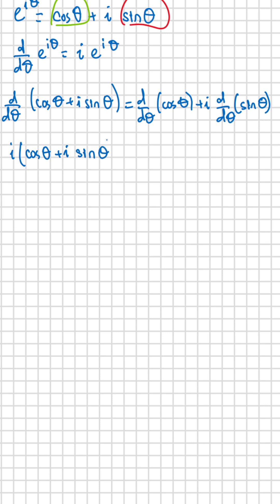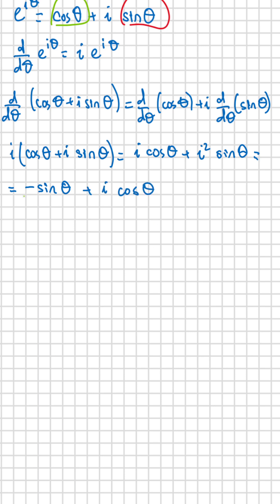Multiplying i with cosine theta plus i times sine theta gives us two terms: first, i times cosine theta, and second, i squared times sine theta. But remember, i squared is negative 1, so the second term becomes minus sine theta. After expanding, we have negative sine theta plus i times cosine theta.